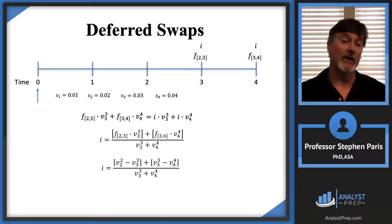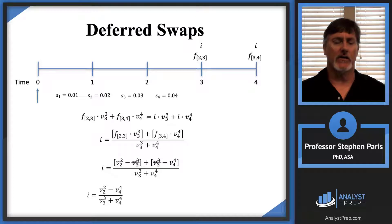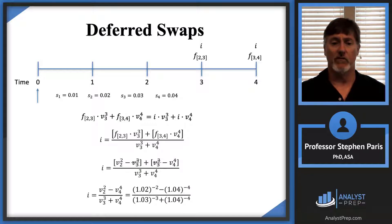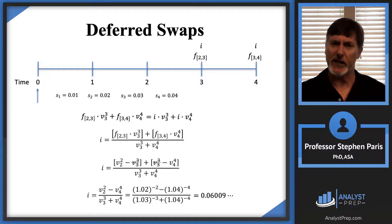This makes for an easier calculation. With level notional amounts, you get a telescoping sum in the numerator — the v₃³ terms cancel — and the swap rate simplifies to (v₂² − v₄⁴) divided by (v₃³ + v₄⁴). You just plug in the numeric values for v₂, v₃, and v₄, and the result is a swap rate of 6.009%.